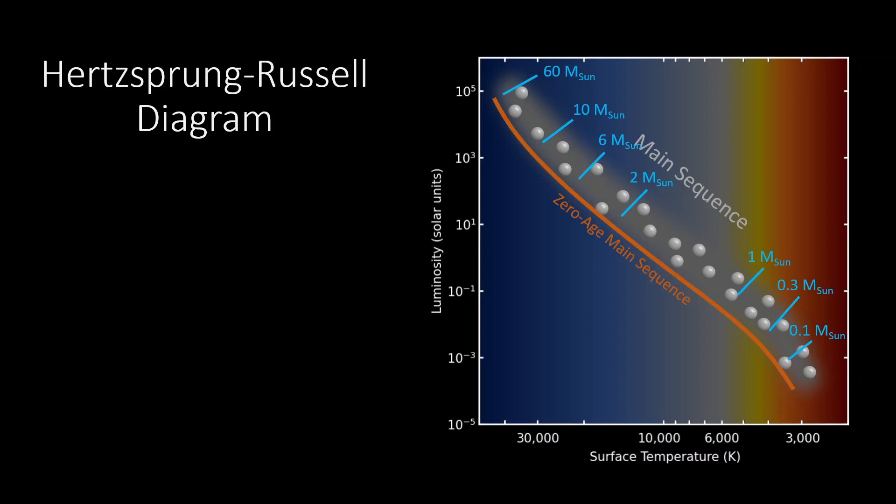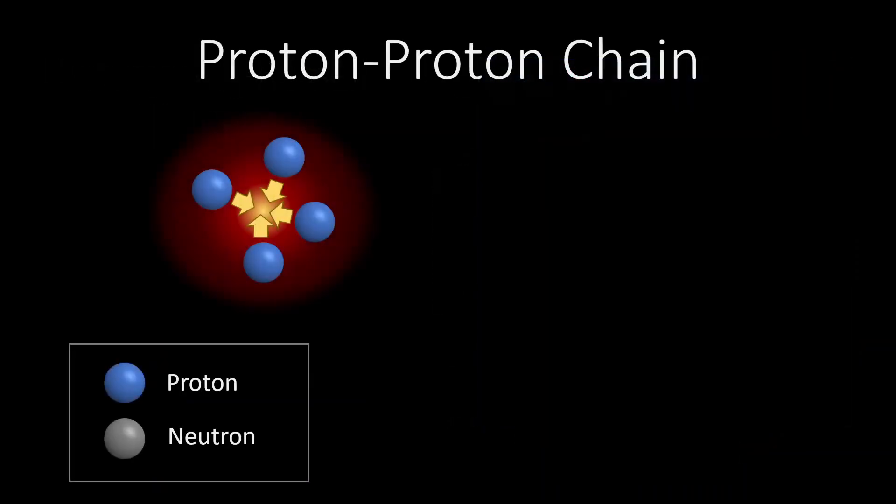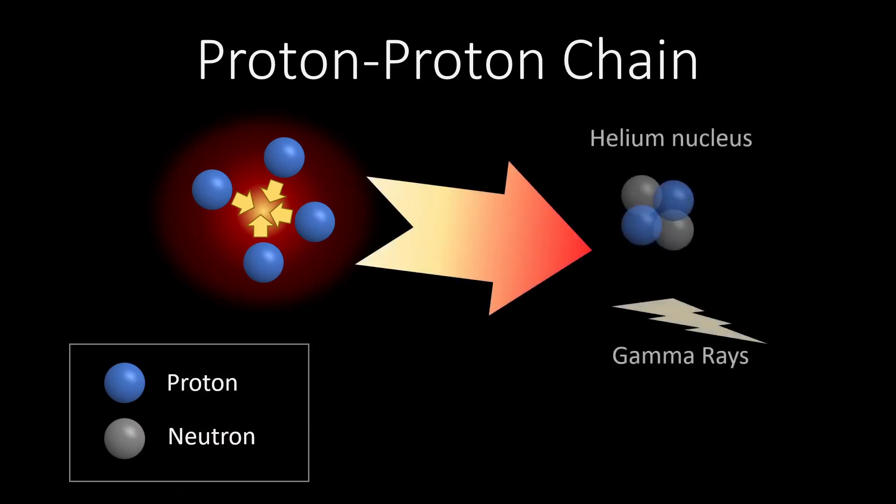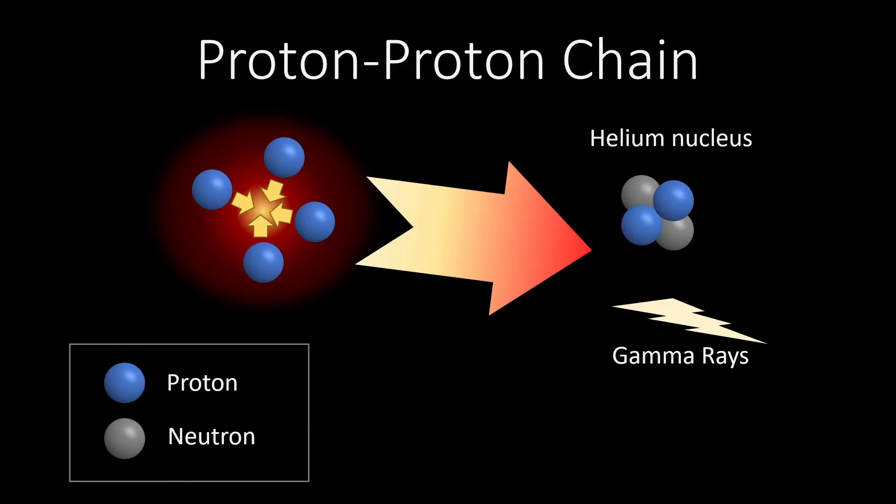Remember that stars produce energy by fusion of hydrogen atoms into helium atoms. In a simplified scheme, this process starts with four nucleus of hydrogen that contain only one proton each. They interact through a sequence of reactions, and the final outcome is an atom of helium with two protons and two neutrons, and an amount of energy emitted as gamma rays.